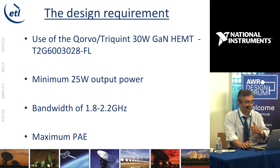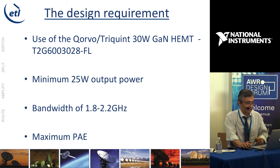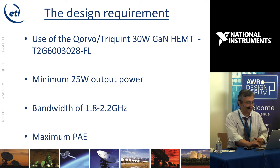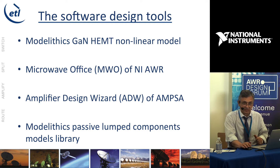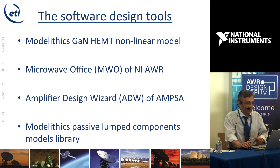The real design we're working on uses the TriQuint 30W Gallium Nitride transistor. We want to achieve at least 25 watts in a relatively broadband bandwidth of 1.8 to 2.2 GHz, with maximum power efficiency at 25 watts. The software design tools include a nonlinear model of the transistor provided by Modelytics for TriQuint/Qorvo, Microwave Office, the Amplifier Design Wizard, and the Modelytics passive lumped component models library.